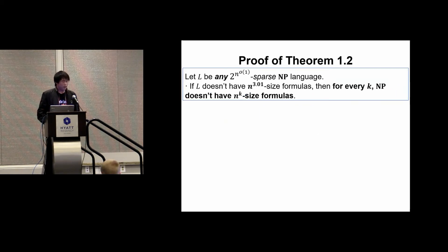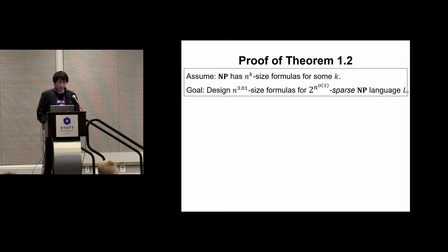In the rest of this talk, I will give the proof of one of our main theorems, which magnifies a nearly cubic De Morgan formula lower bound into a strong lower bound. We're going to prove the contrapositive. We'll assume that NP has n^k size formulas for some k, and our goal is to design n^3.01 size formulas for any given sub-exponentially sparse NP language L.